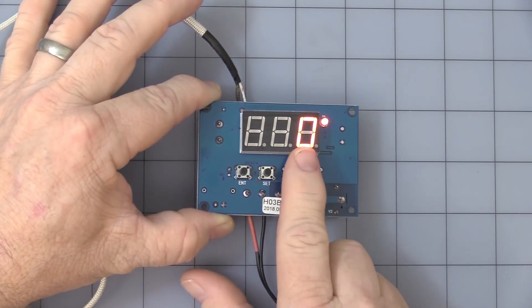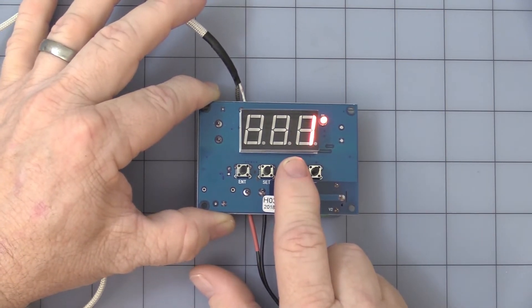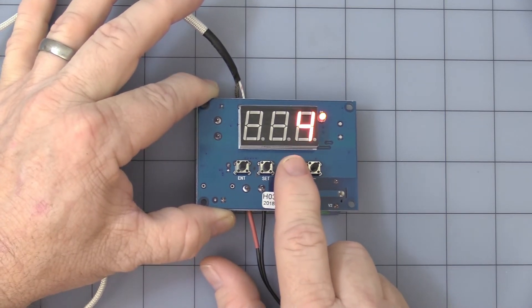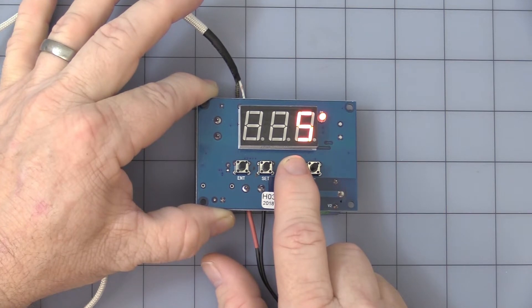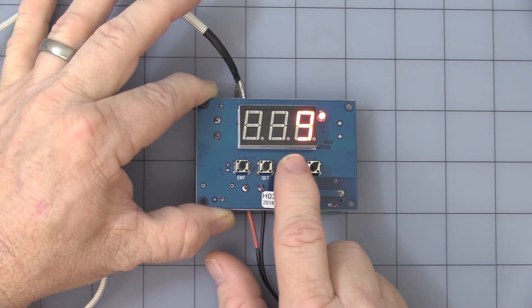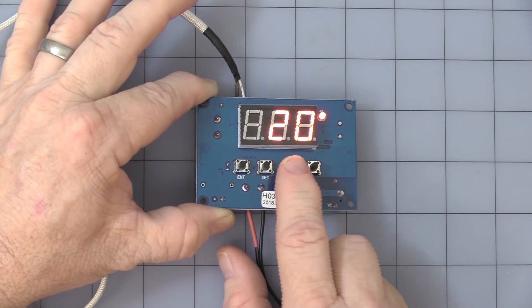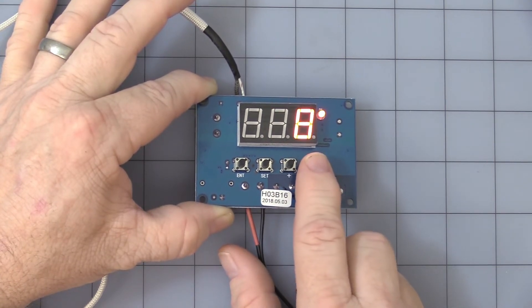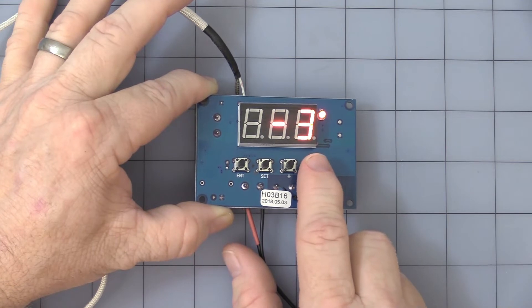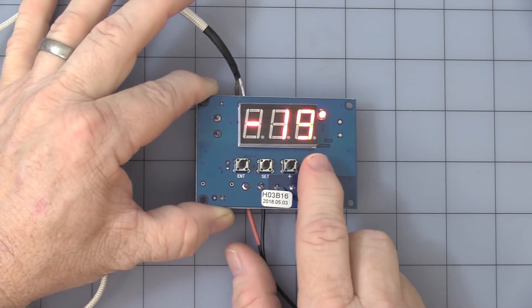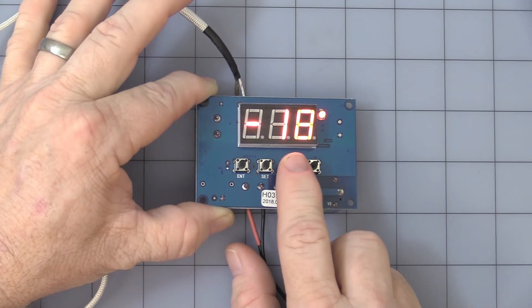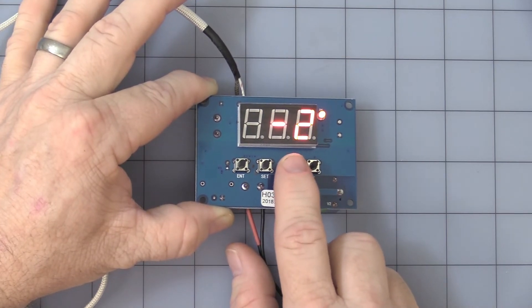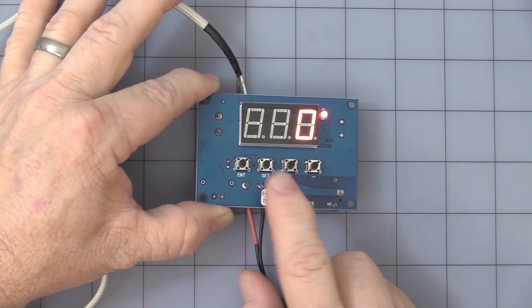Set button again. And this is a temperature correction. So if for some reason it is off, you can manually adjust. It allows you to do plus or minus 20 degrees temperature correction. But it comes factory set at zero, and we'll leave it set at zero. That's the temperature correction.